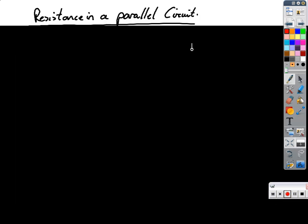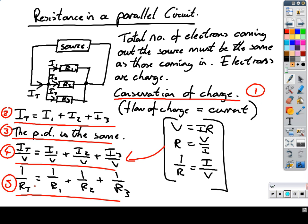Resistance in a parallel circuit is quite similar, except we can't use conservation of energy. There is no conservation of energy really that's making any difference in our parallel circuit. The amount of energy going in is the amount of energy coming out because the voltage is the same across each of the branches. The total number of electrons must be the same. They can't disappear. The amount of electrons coming out the source must be equal to the number of electrons going into the source. Electrons are charged. The flow of electrons is current.